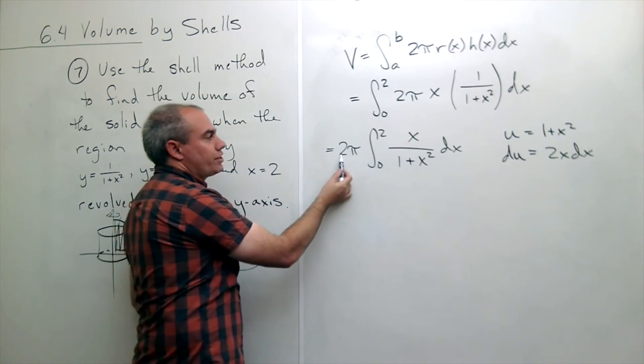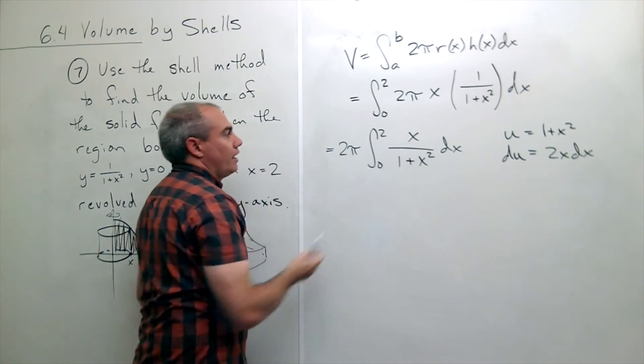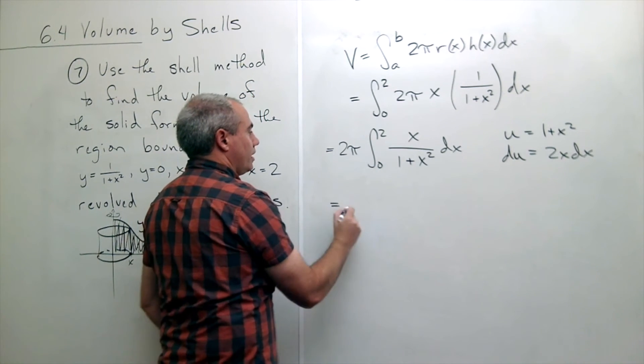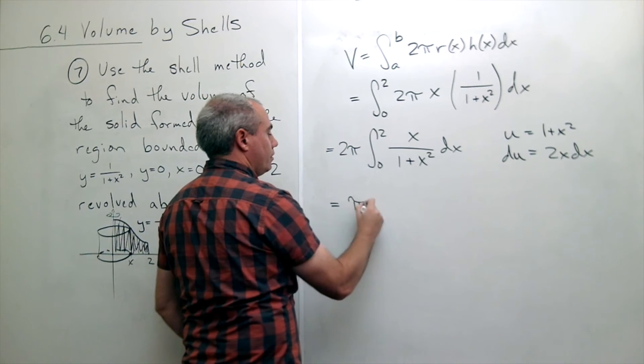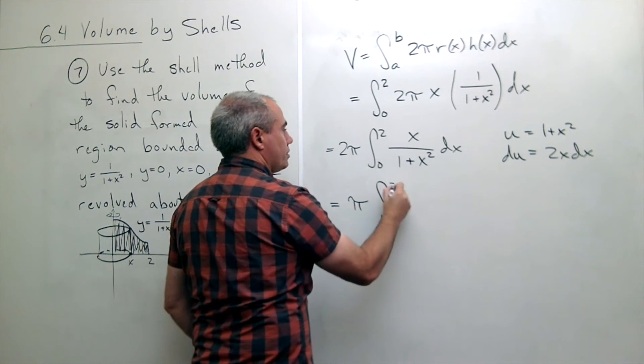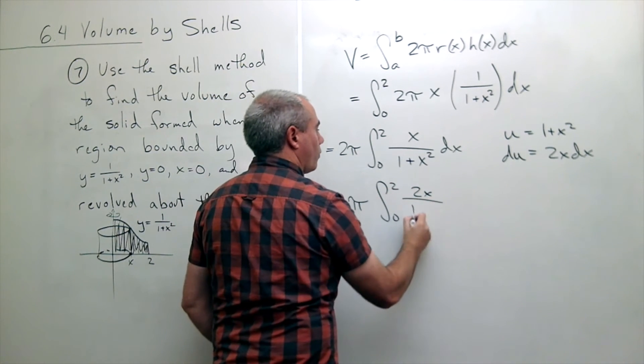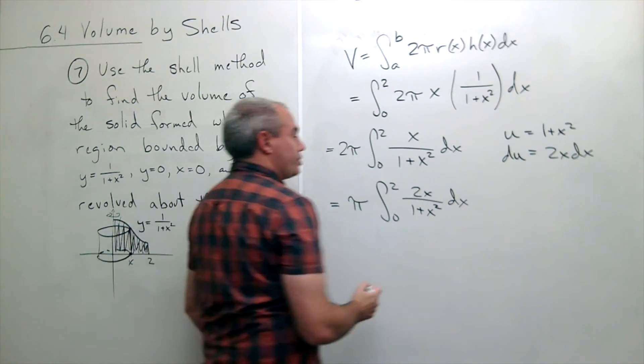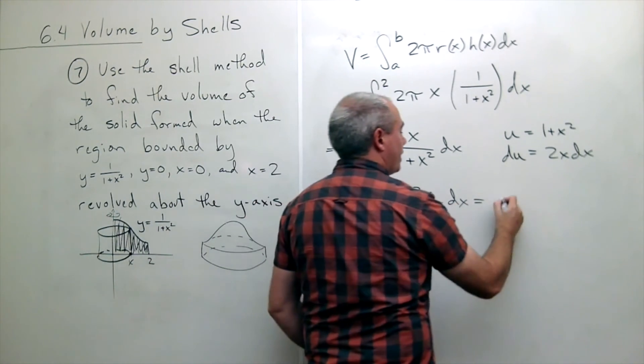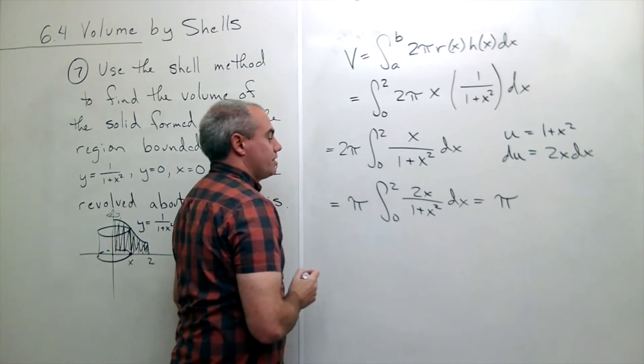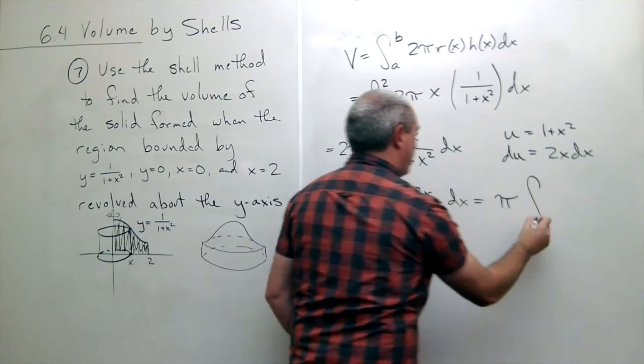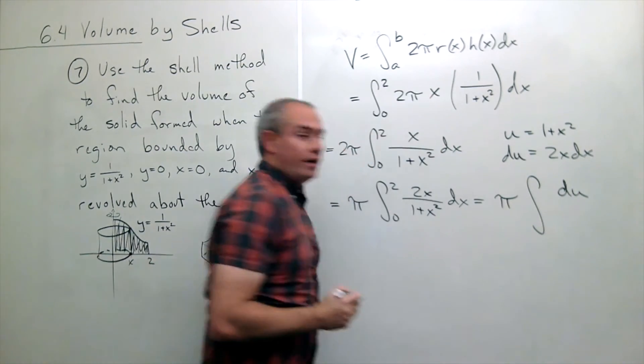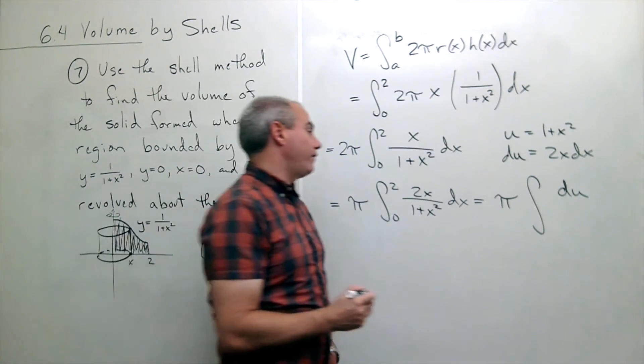So I could move the 2 inside and attach it to that x. If I do then I just have pi integral from 0 to 2 of 2x over 1 plus x squared dx. Which now I see I could rewrite using my u substitution as the integral of on top I just have du and on the bottom I have u.